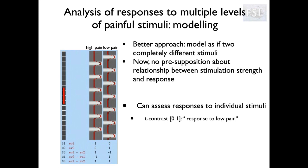We can easily achieve that flexibility within the GLM by associating a different parameter with each condition. We'd have a separate parameter for high pain representing the level of response in that condition, and a separate parameter for low pain — each is a parameter estimate or beta value. By setting up two different EVs, we have a parameter for each: EV1 contains all the high pain conditions and EV2 contains all the low pain conditions, with the baseline rest condition implicit.